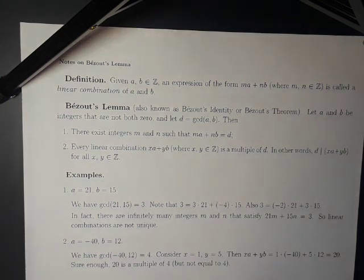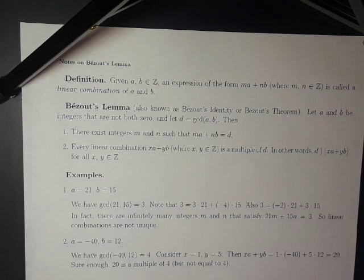One definition that will be useful is the following. Given integers a and b, an expression of the form ma plus nb, where m and n are integers, is called a linear combination of a and b.